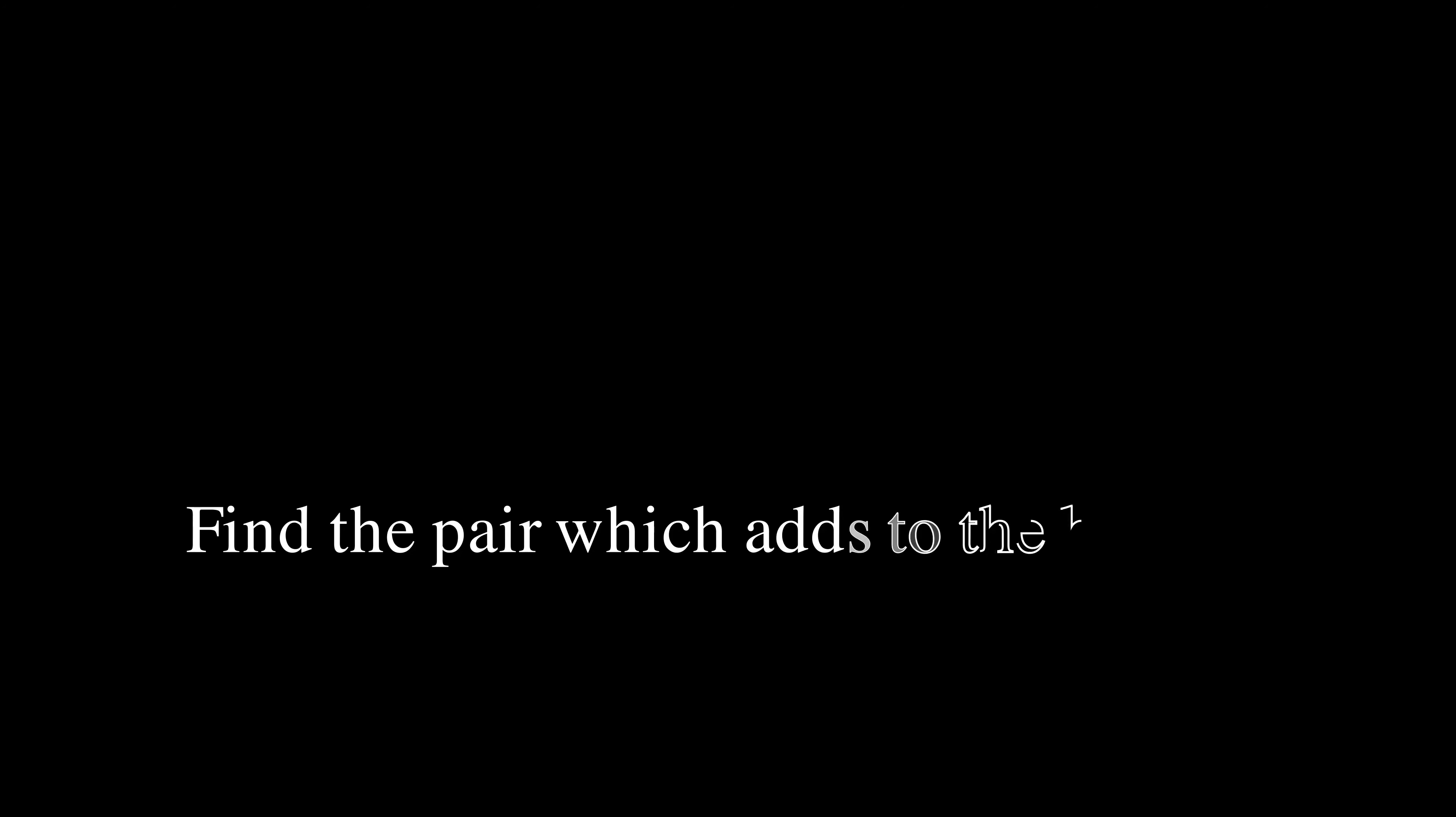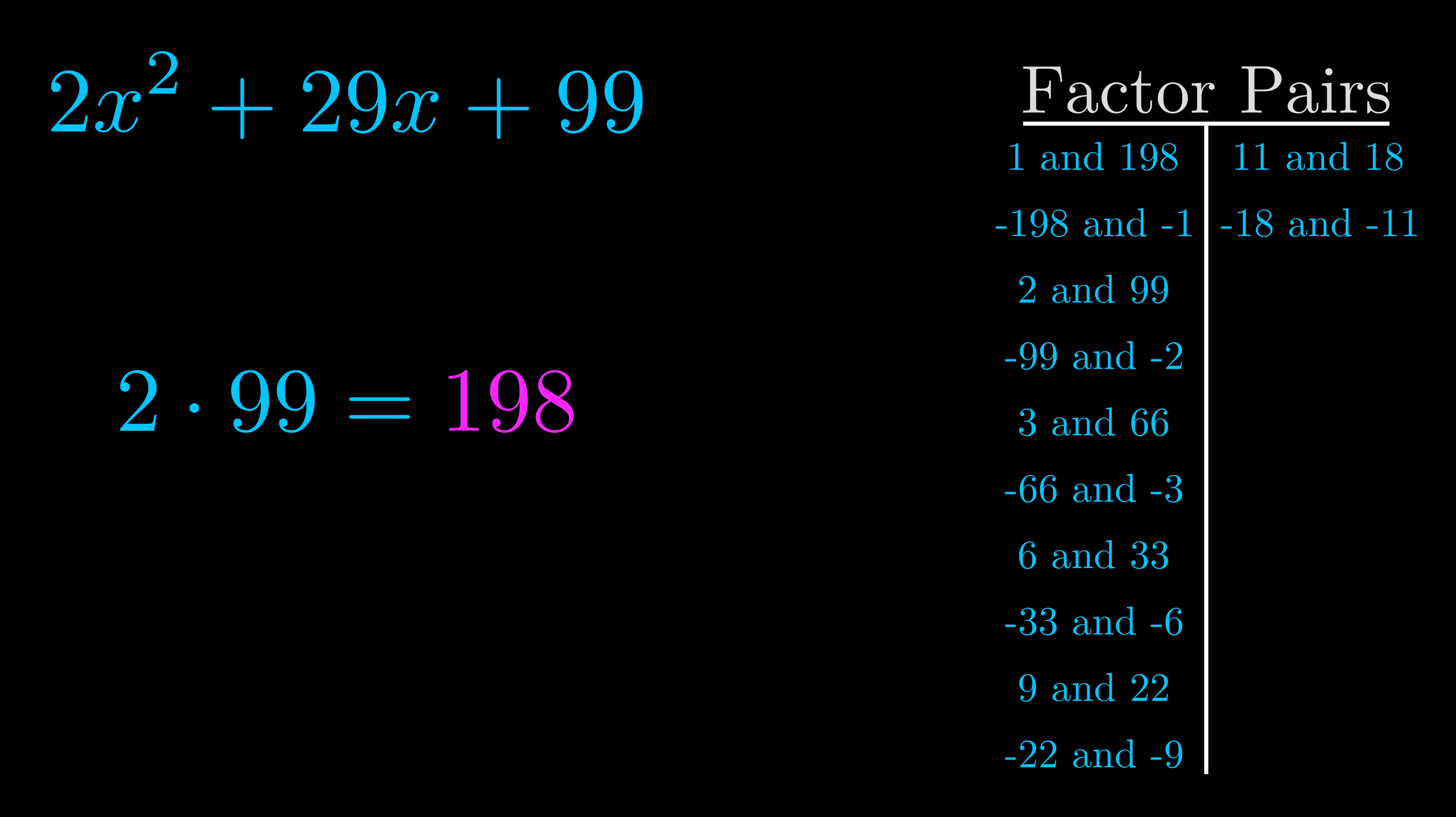The b value is the coefficient on the x term. That's the middle term, the one that we haven't done anything with yet. And really this is the only factor pair that we need.